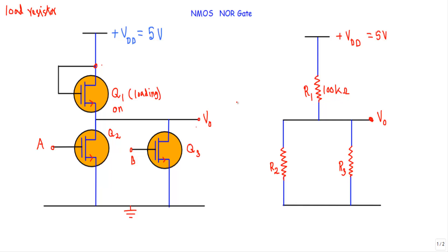Transistors Q2 and Q3 are known as switching MOSFETs — they will be either ON or OFF. In the OFF state, transistors offer a resistance of 10^12 ohms. I can replace the channels of Q2 and Q3 with resistances R2 and R3 respectively, giving us an equivalent resistive network from which we take the output.